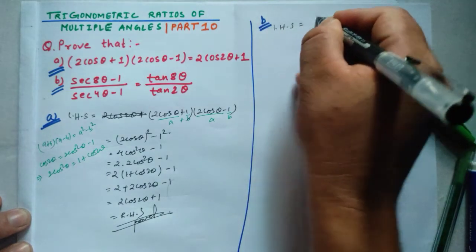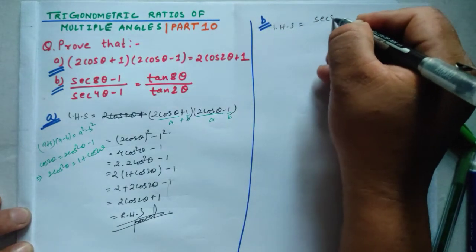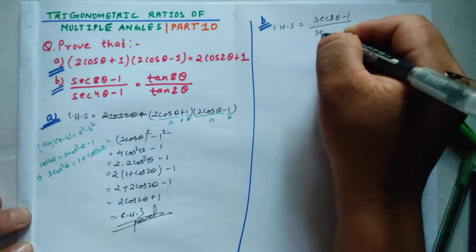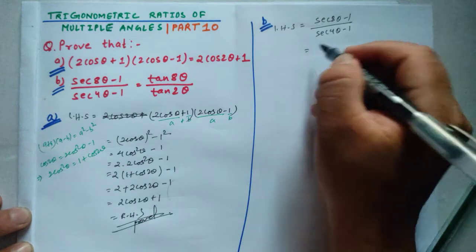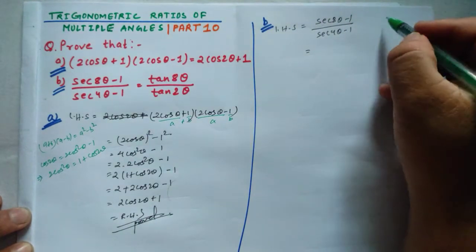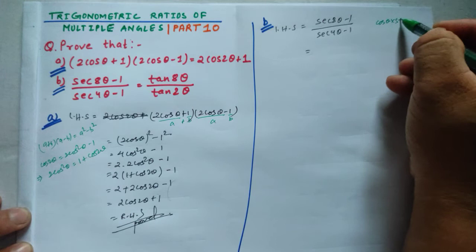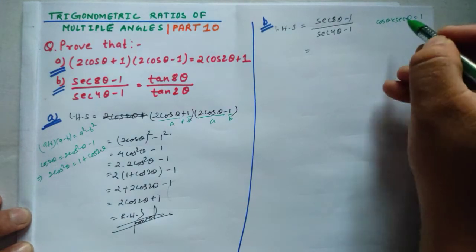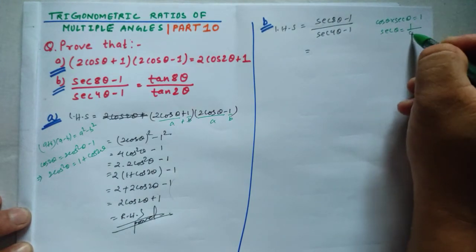Problem (b): LHS equals (sec8θ - 1) / (sec4θ - 1). Using the reciprocal relation, cosθ × secθ = 1, and secθ = 1/cosθ.